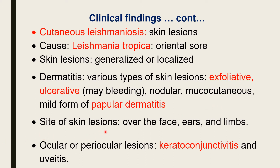The site of skin lesions may be either generalized all over the body or restricted to certain parts such as over the face, ears, and limbs. Some cases show ocular or periocular lesions — lesions around the eye. The lesion is keratoconjunctivitis, inflammation of the cornea and eye mucous membrane, and uveitis.